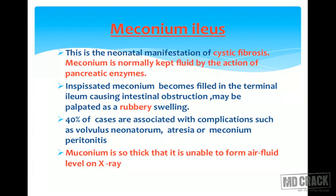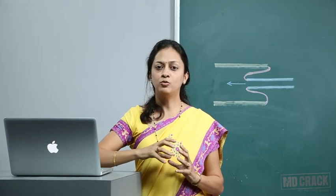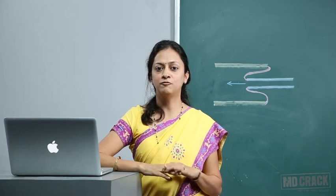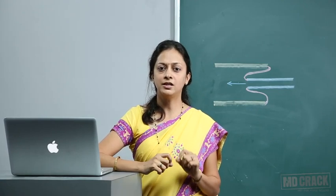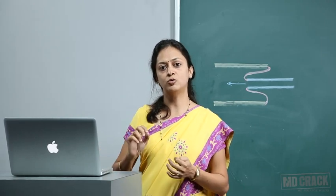It may be palpated as a rubbery swelling. 40% of cases are associated with complications such as volvulus neonatorum, atresia, or meconium peritonitis. Meconium is usually seen when pancreatic enzymes are absent, as in cystic fibrosis. On X-ray, there will be no gas fluid levels in meconium ileus because the meconium is very thick.